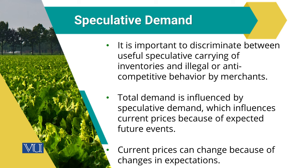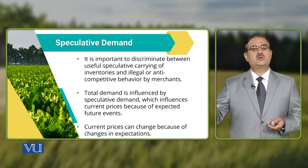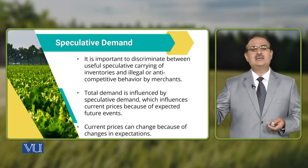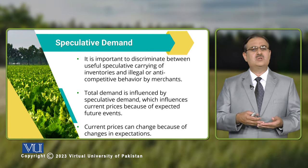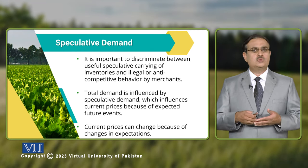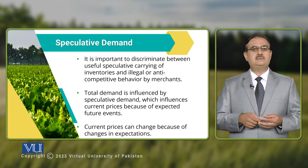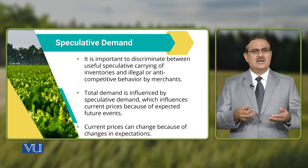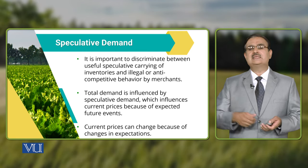One of the most important things under speculation is that because of speculative demand, current prices can change because of expectations. If the expectation is that future prices of a commodity will increase, it also has some impact on the current prices of that commodity. For example, if the expectation is that the price of rice will double in the future, then current rice prices will also increase to some extent.